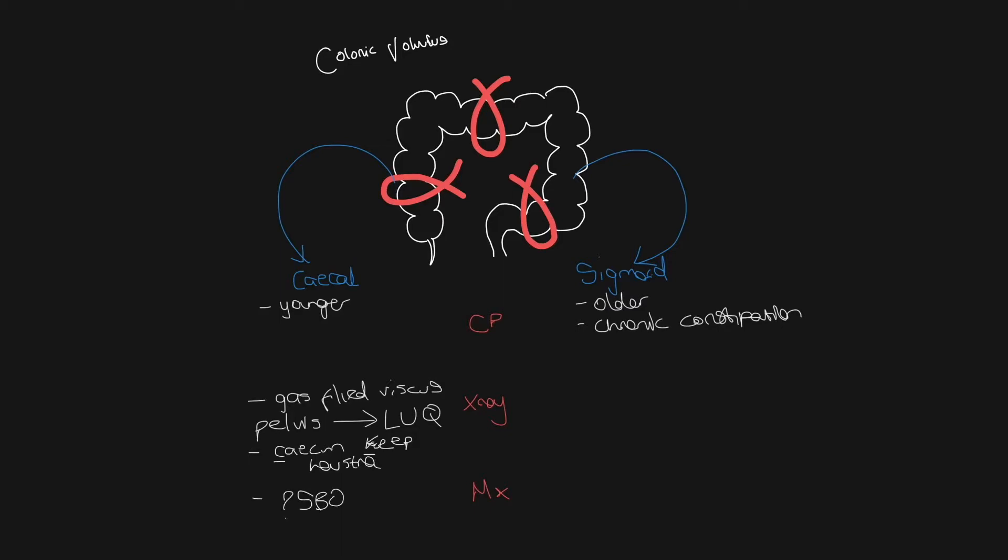But given the location of the cecum, which is distal to the small bowel, you will eventually get small bowel obstruction. And this can be seen as centrally located dilated loops of bowel. They usually have the appearance of stacked coins because of the valvulae conventes, which go around the whole circumference of the small bowel.